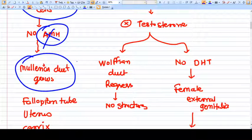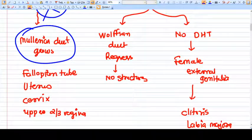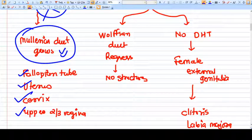So mullerian duct will grow, and my friends, mullerian duct is the very very important structure for females because the fallopian tube, the uterus, the cervix, and the upper two-thirds of the vagina developed from mullerian duct. So it's a very important duct.